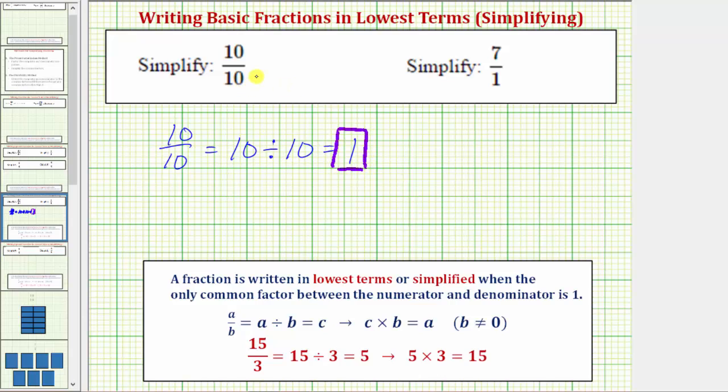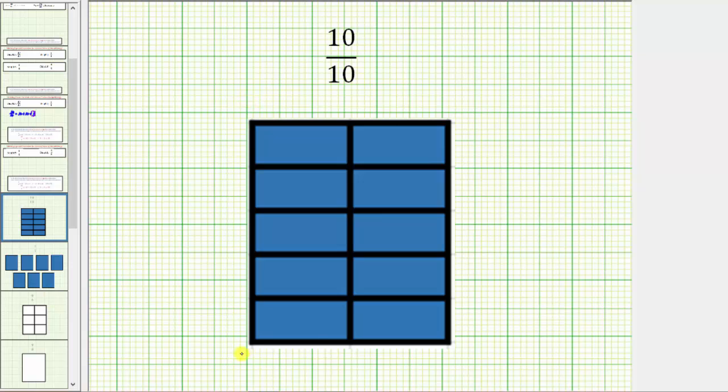Let's also think about this conceptually. 10 tenths means we have 10 one-tenths. To model this, if we define this rectangle as one whole, because the denominator is 10, we cut or partition the rectangle into 10 equal parts or pieces, as we see here.